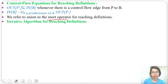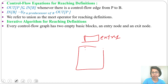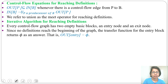Next, the iterative algorithm for reaching definition. There are two empty blocks in the control flow graph: one is the entry node and another is the exit node. There will be one entry node, then the control flow graph for basic blocks, and one exit node at the end. Since no definition reaches the beginning of the graph, the transfer function for the entry block returns phi as the answer.